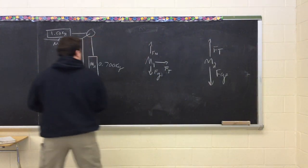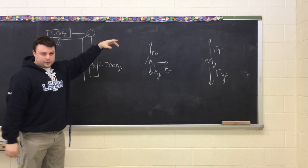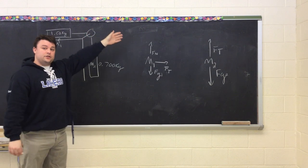Now if we took this mass right here and we brought it up and they were on the same horizontal plane, that would mean that the tension on this side would be going this way and the tension on this side would be going that way.